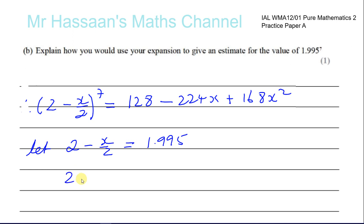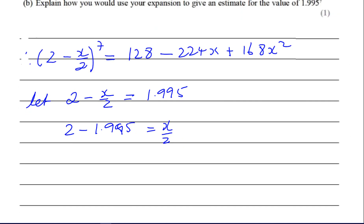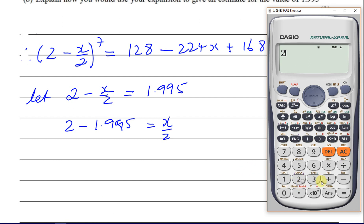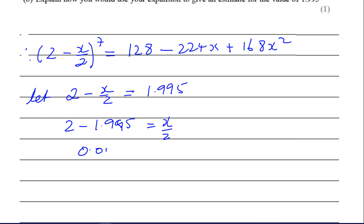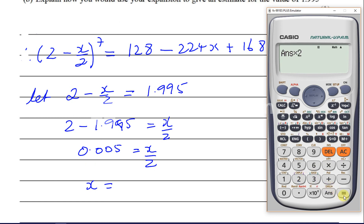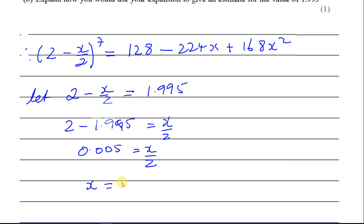We have 2 minus 1.995 equals x over 2. So 0.005 equals x over 2. Multiplying both sides by 2, x equals 0.01.